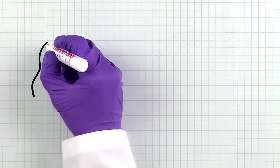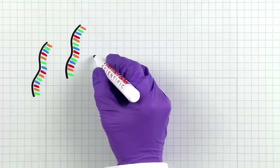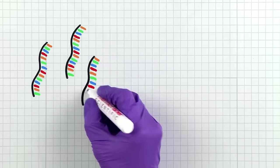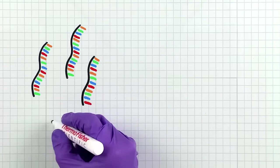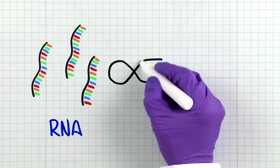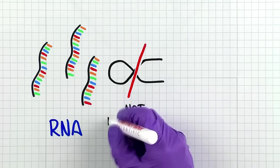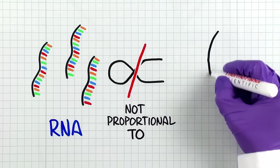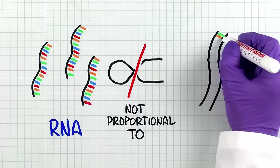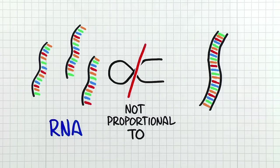First, beware of reverse transcription RT bias. When converting RNA to cDNA, nearly all RT enzymes have the potential to introduce RT bias. When this happens, the amount of cDNA won't align with the amount in the RNA samples.